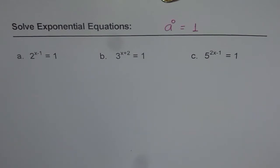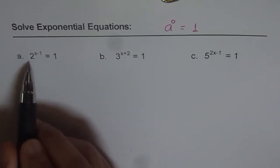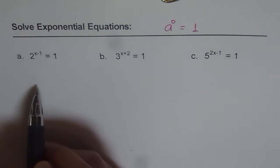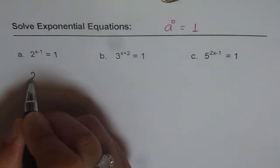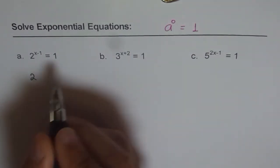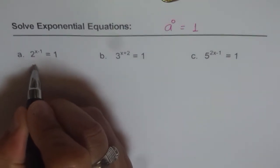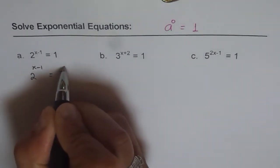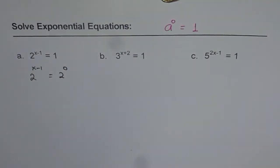Let's see how to solve them. The first one is 2 to the power of x minus 1 equals to 1. To solve this, I have to write 1 as 2 to the power of something. So that is, as we know, 2 to the power of 0. Anything to the power of 0 is 1.